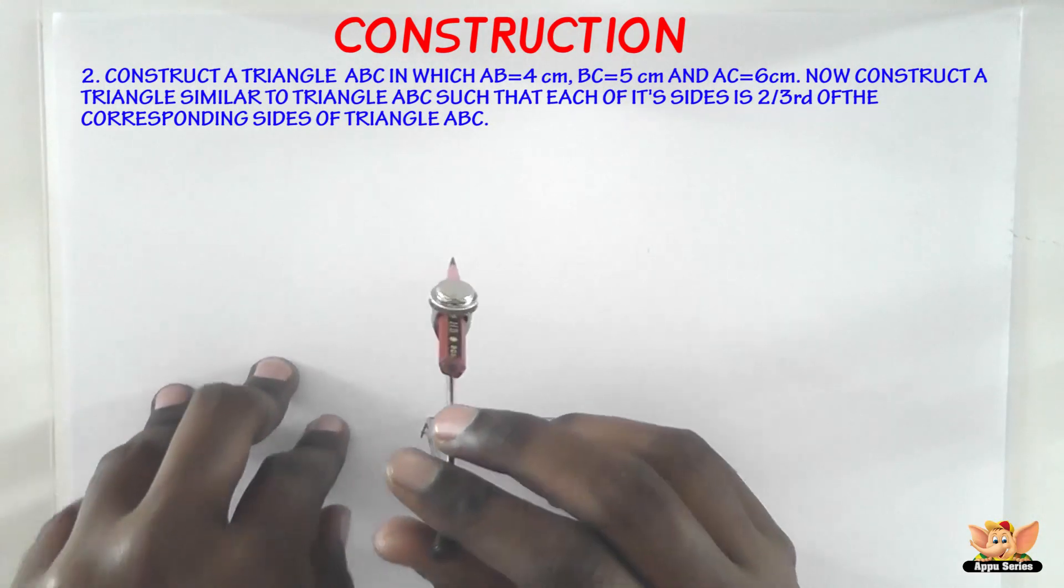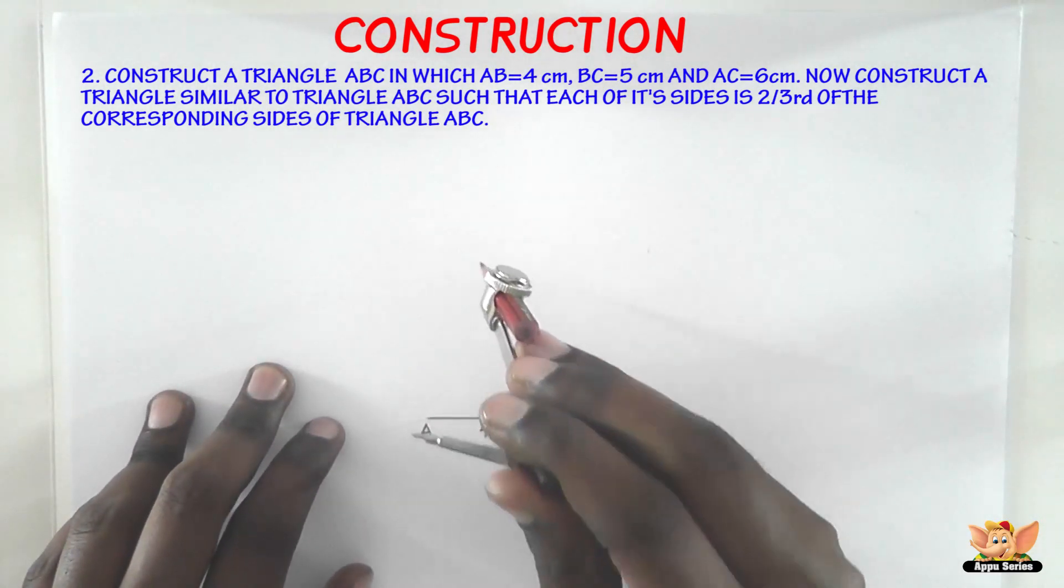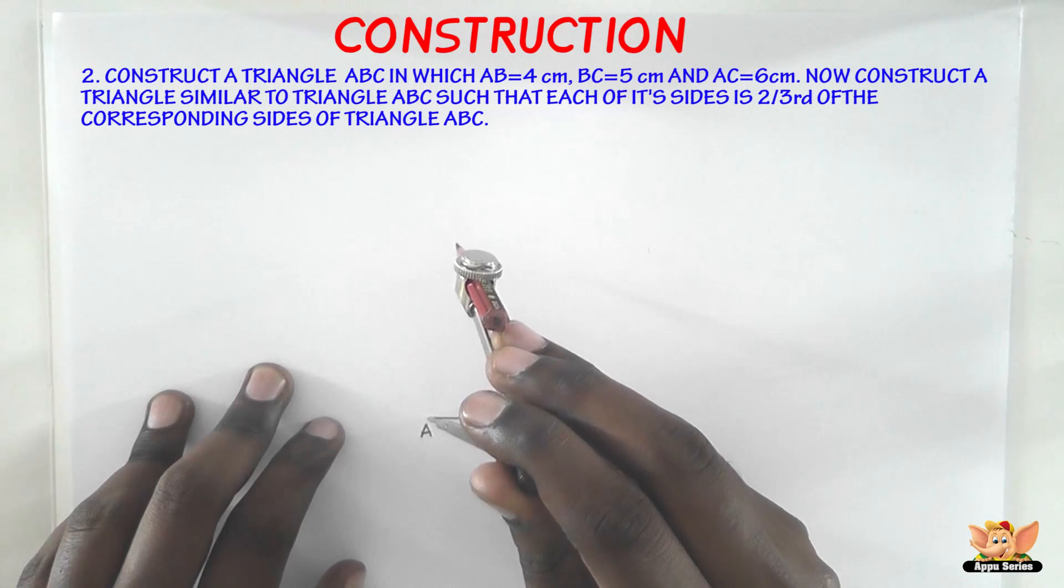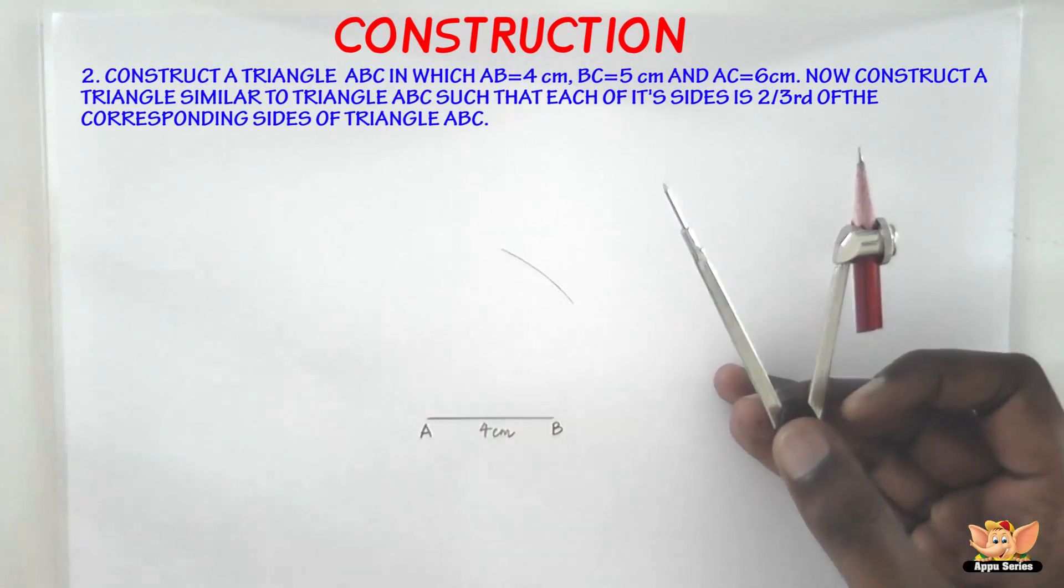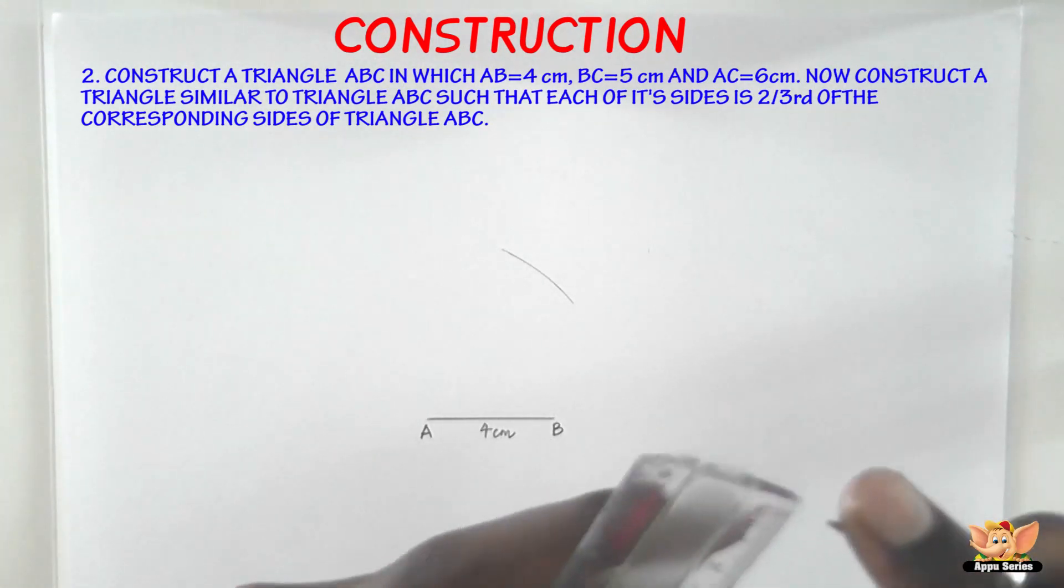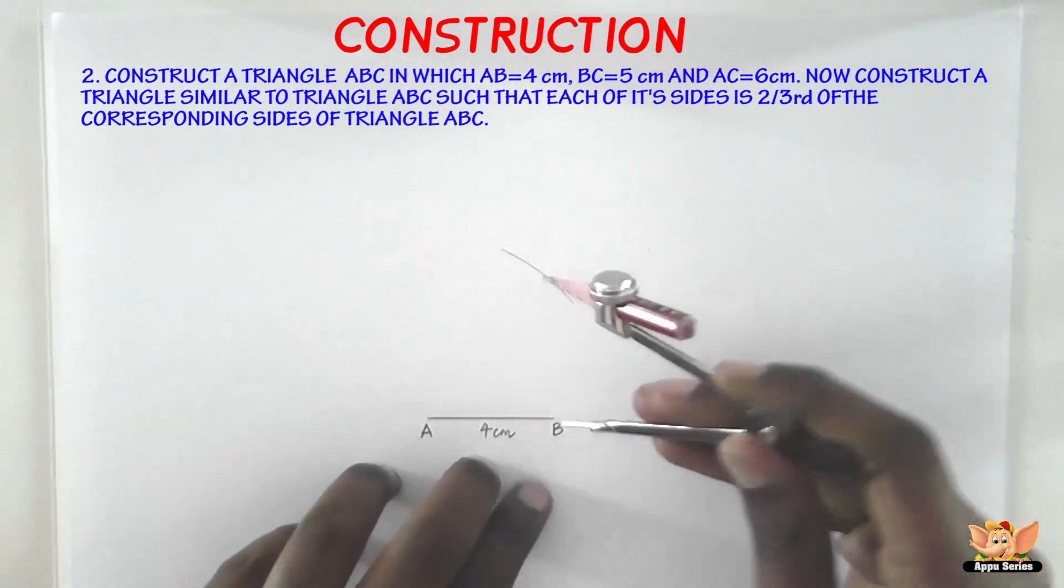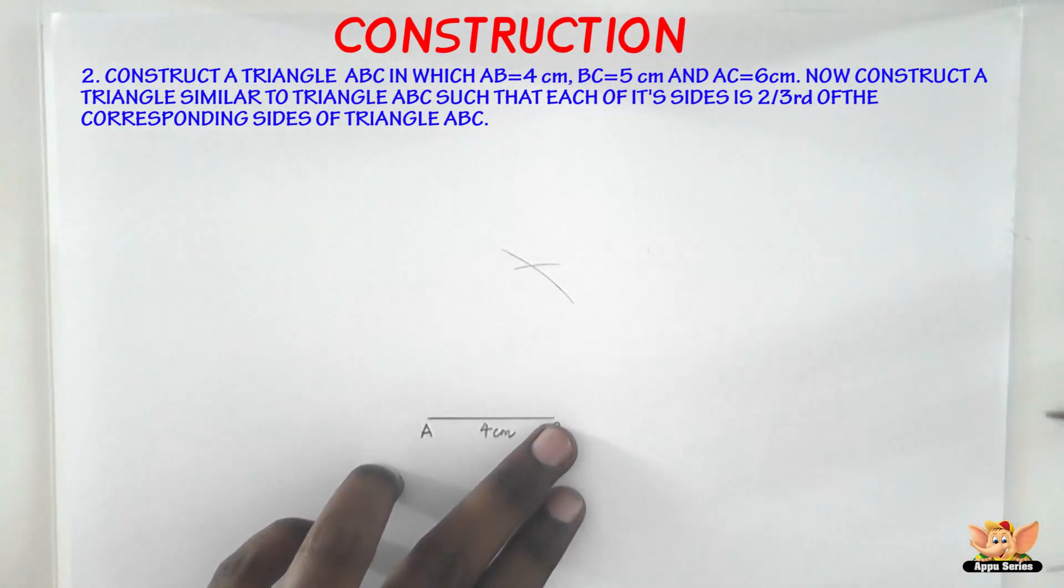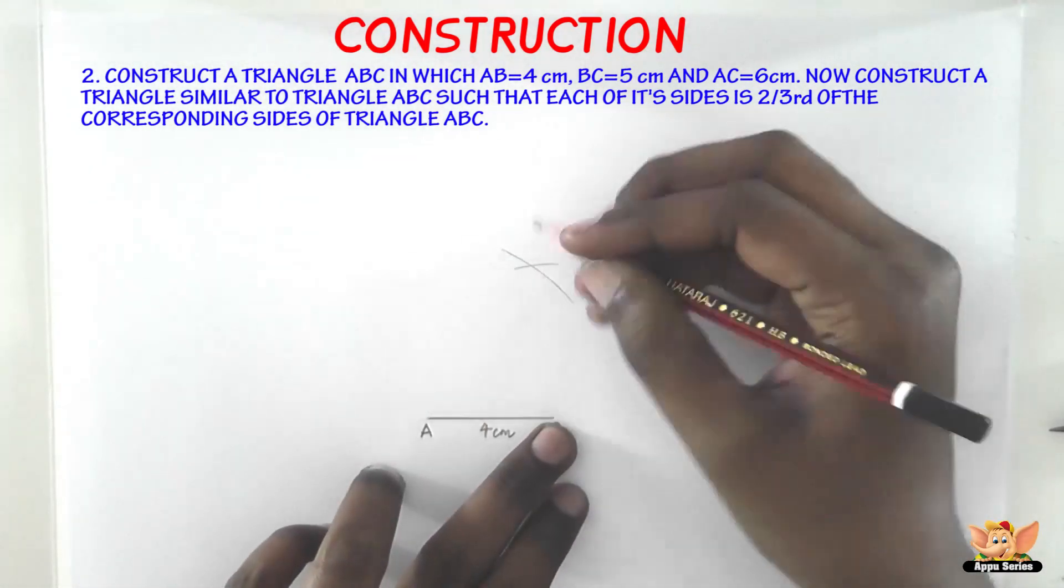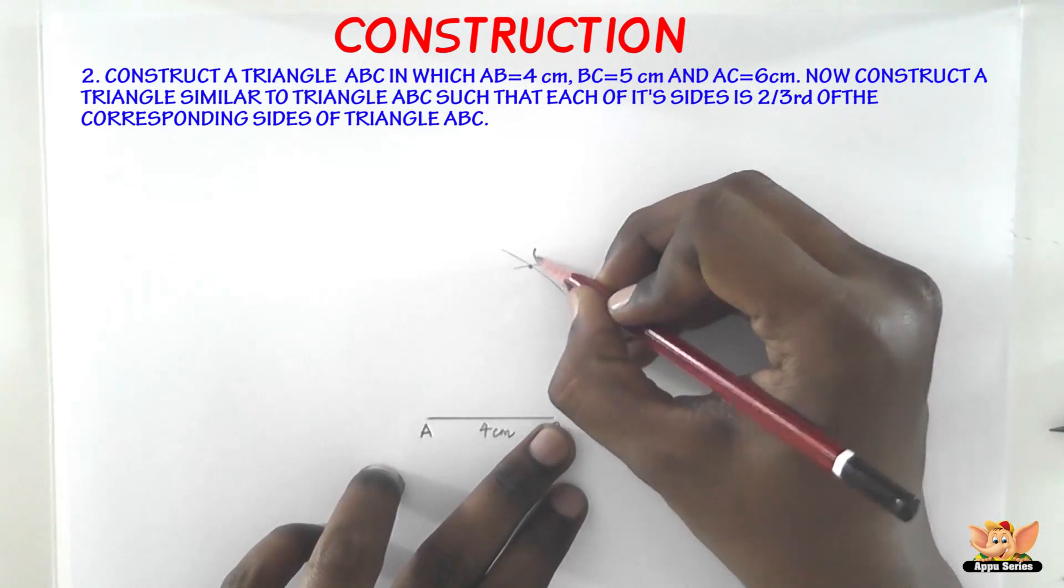So now AC equals 6 cm as the radius. Cut an arc here. And BC measures 5 cm. So let us measure 5 cm on the compass.